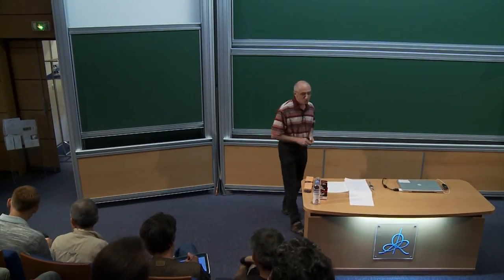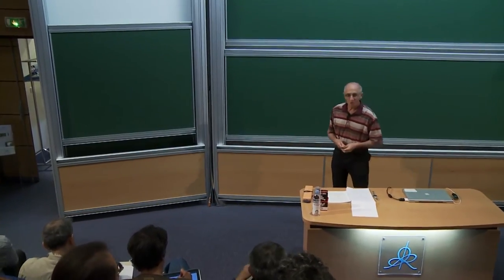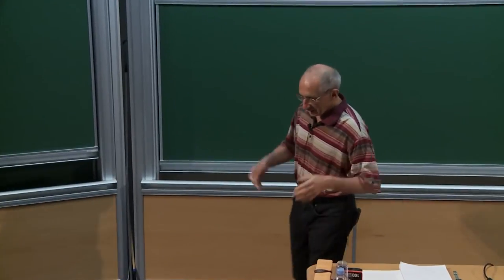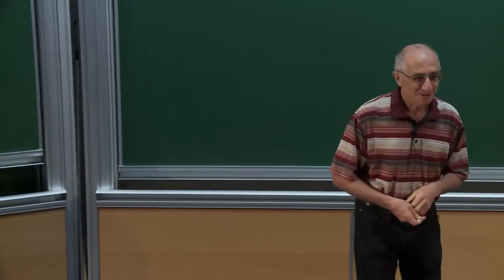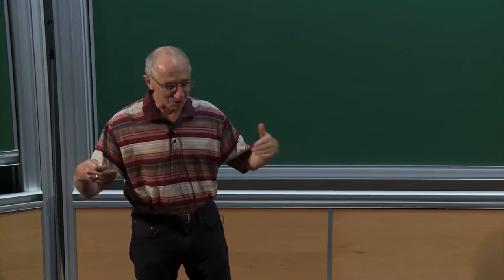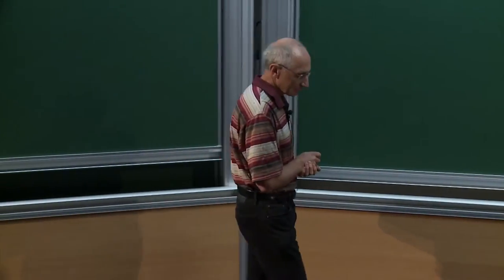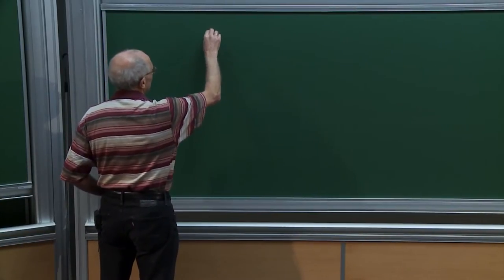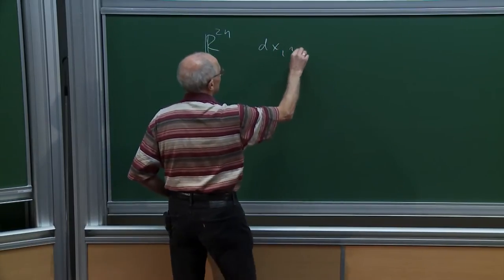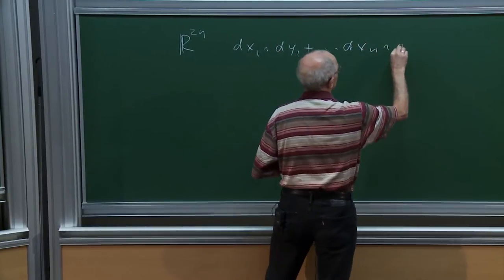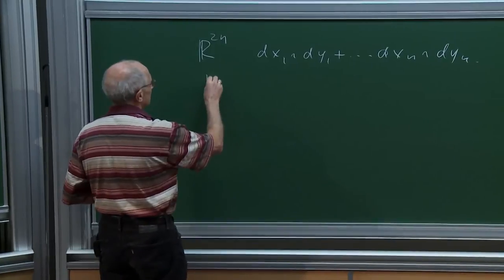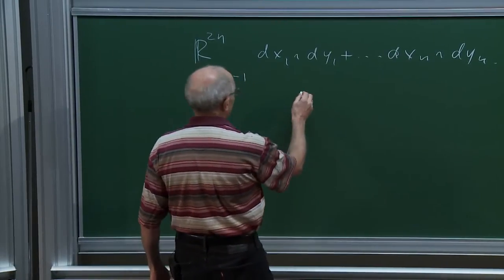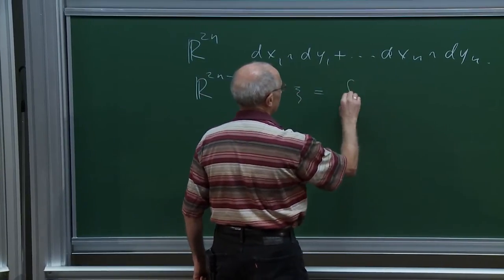My talk will go in a different direction from most talks, because instead of explaining how to develop great structures in symplectic topology, I want to put some limitations on this. A symplectic manifold is a manifold locally modelled on flat symplectic space, and a contact structure is an odd-dimensional analog of this — a projective analog of symplectic structure. It's a hyperplane field locally modelled on the plane field given by the Pfaffian equation.